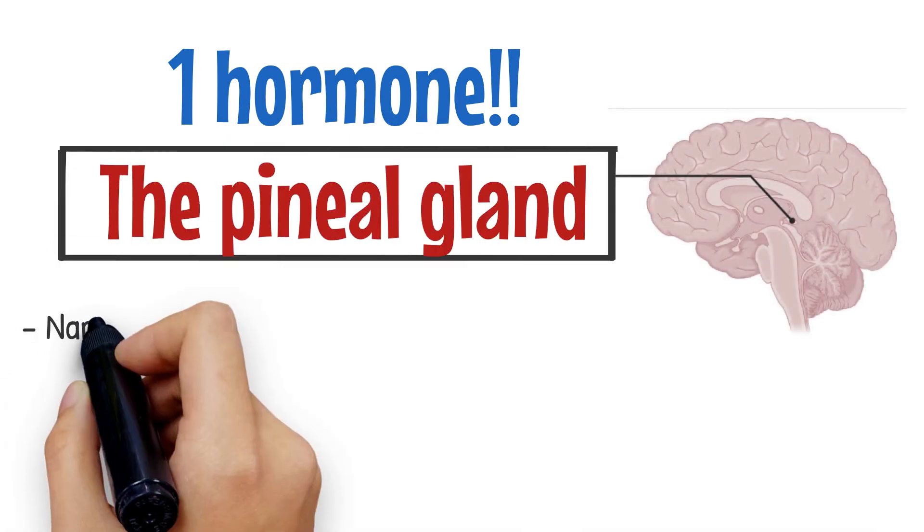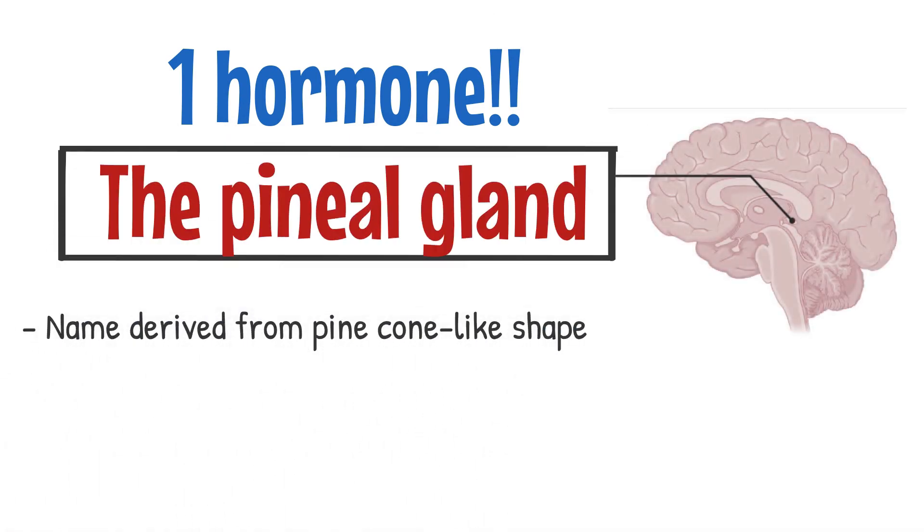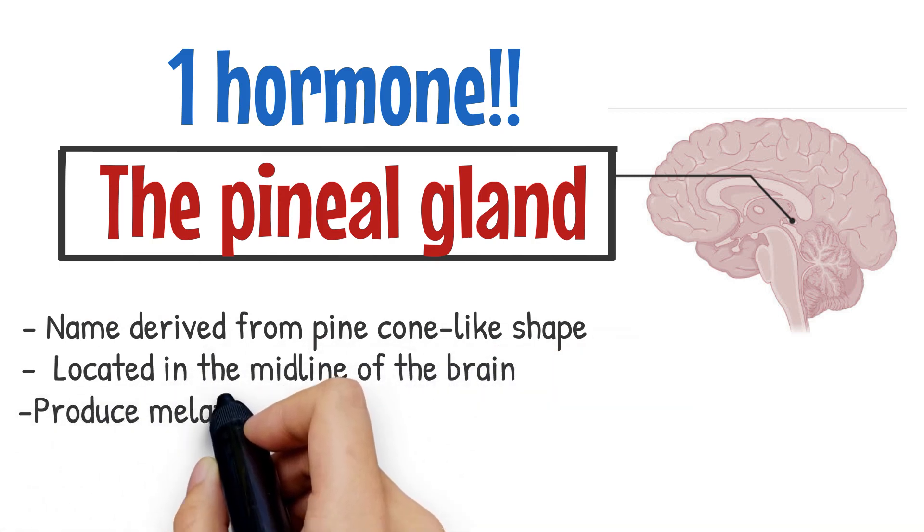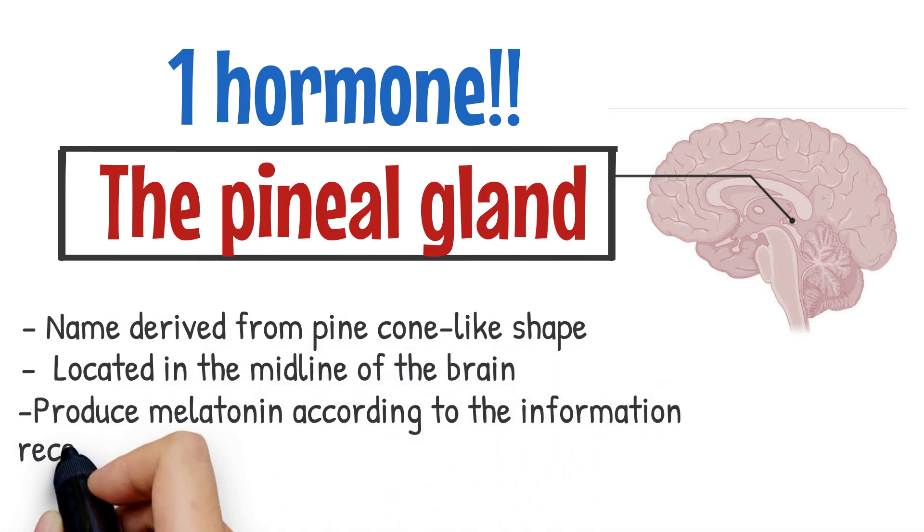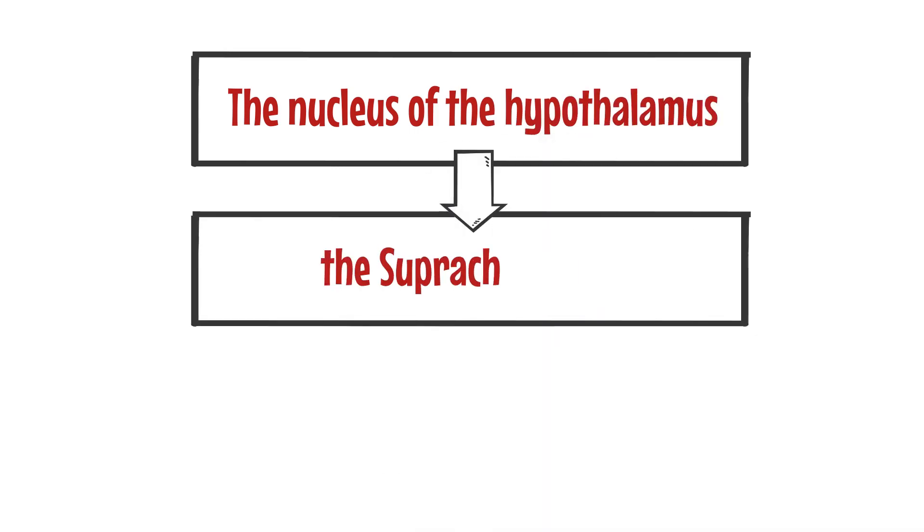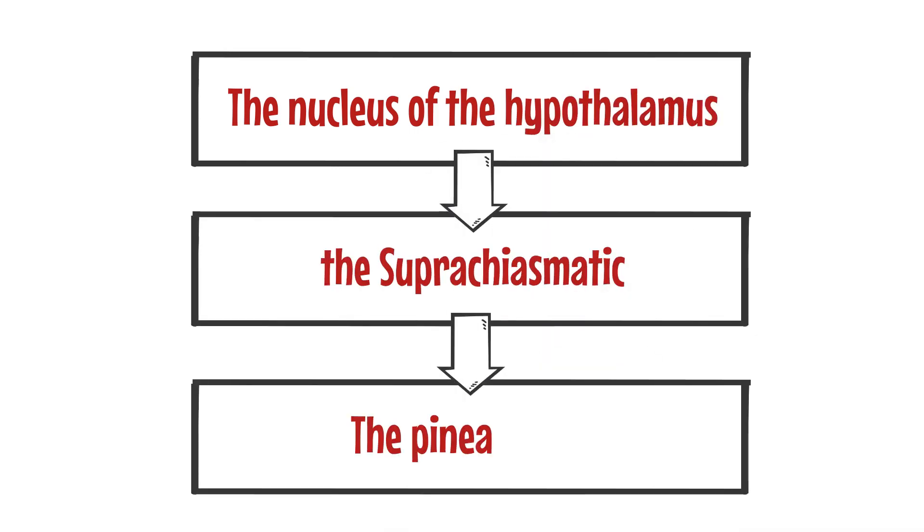The pineal gland, whose name is derived from its pine cone-like shape, is located in the midline of the brain and its core function is to produce melatonin according to the information received about the state of the light-dark cycle from the retina. The information then travels to the nucleus of the hypothalamus, the suprachiasmatic, and then to the pineal gland.